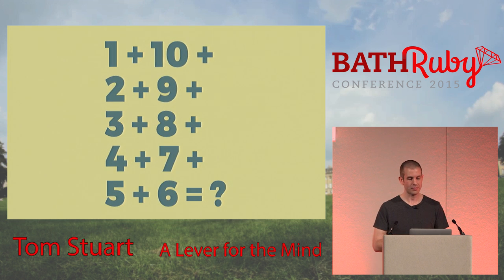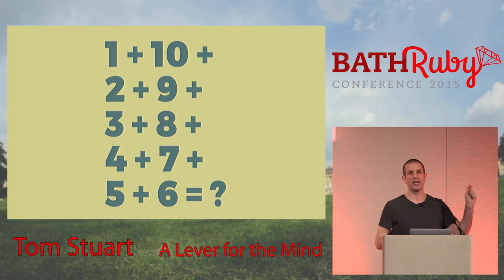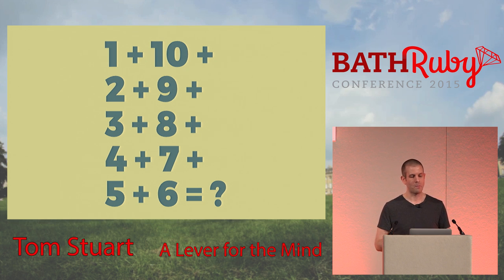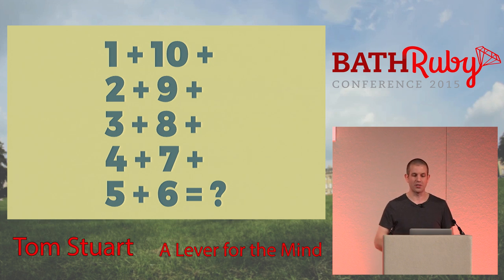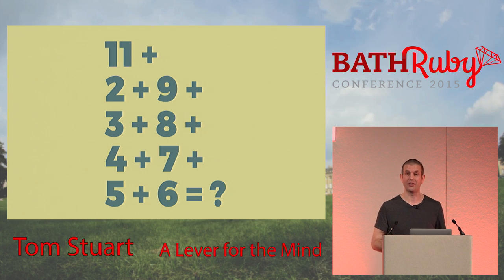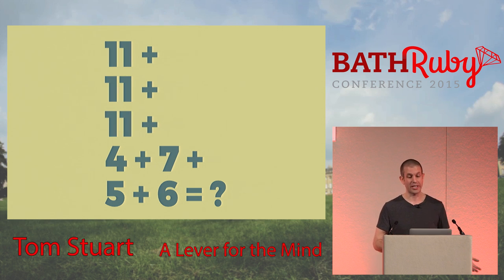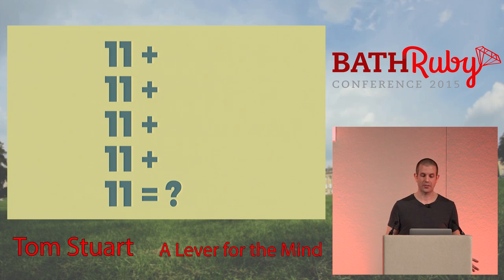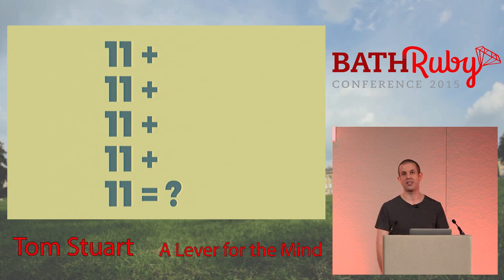So we can add the numbers from 1 to 10 in a different order without affecting the answer. Let's rearrange them: 1, 2, 3, 4, 5 down the left side, then 6, 7, 8, 9, 10 up the right side — all the same numbers, so the answer will be the same. Another property of addition is that if we're adding many numbers, it doesn't matter what order we do the individual additions in — that's called associativity. So we can choose to add the first pair to get 11, then add the 2 and 9, then 3 and 8, then 4 and 7, then 5 and 6. Once rearranged into those pairs, each pair adds up to 11, and now it's easy to see that the answer is 55.